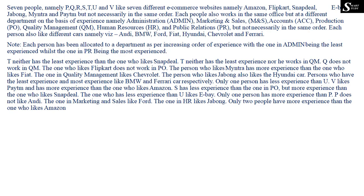The question here is: seven people, namely P, Q, R, S, T, U, and V, like seven different e-commerce websites, namely Amazon, Flipkart, Snapdeal, Jabong, Myntra, and Paytm — but not necessarily in the same order. These seven persons each like one of these seven different e-commerce websites.